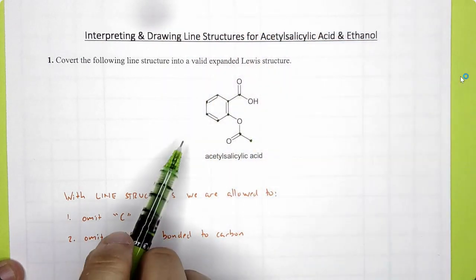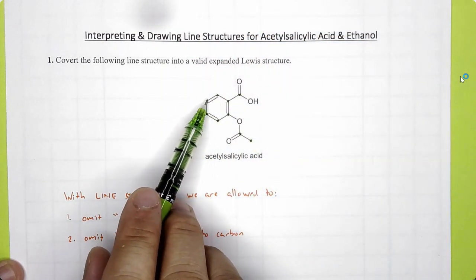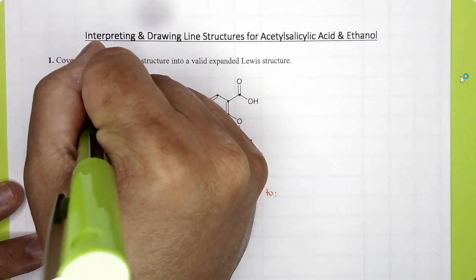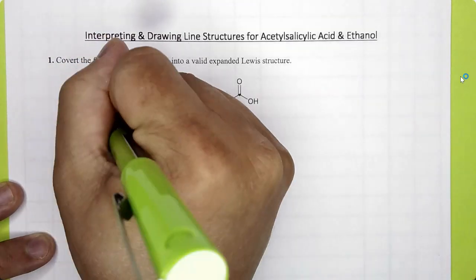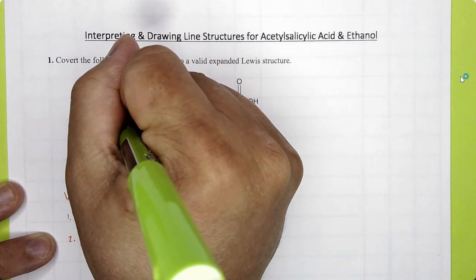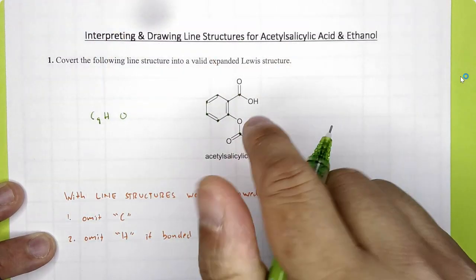Let me mark the other carbons. And we have a total of 1, 2, 3, 4, 5, 6, 7, 8, 9. Your molecular formula starts out with C9. We do not know how many hydrogens there are yet. And we do know that there are 4 oxygens.